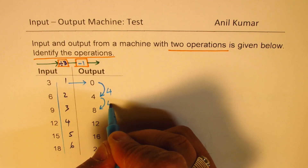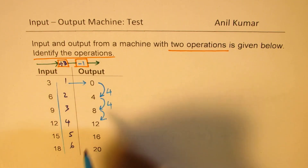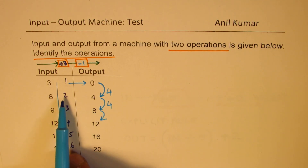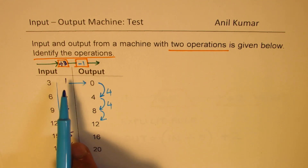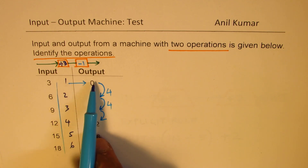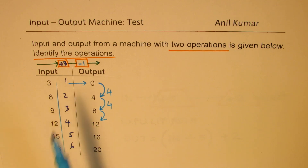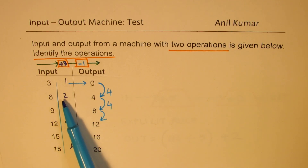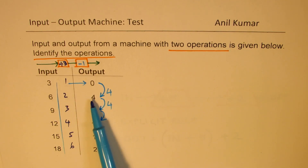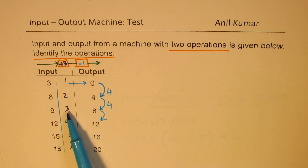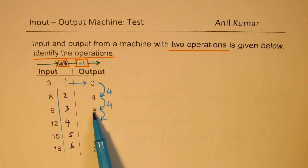Looking at the outputs, they are increasing by 4 each time. So I could multiply by 4 and then take away 4. Let's check: 2 times 4 is 8, take away 4 gives 4 — it works. 3 times 4 is 12, take away 4 gives 8 — it works too.